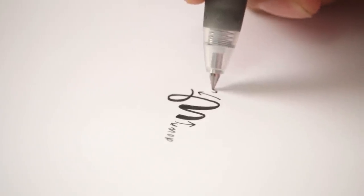The opposite of a downstroke is an upstroke, and these will be light and thin. They're when you're pushing the pen away from you.